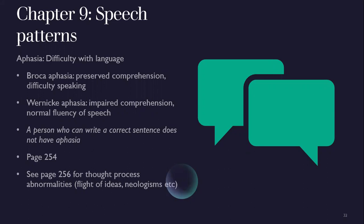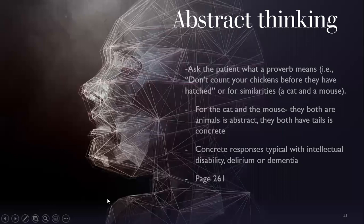Thought process abnormalities are listed on page 256 — things like flight of ideas and neologisms. For abstract thinking, you can test it by asking the patient what a proverb means — like 'Don't count your chickens before they hatch' — or ask for similarities between a cat and a mouse. Abstract: 'they're both animals'; concrete: 'they both have tails.' Concrete responses are typical with intellectual disability, delirium, or dementia.